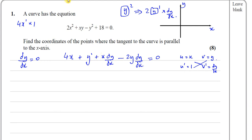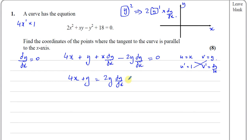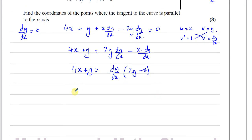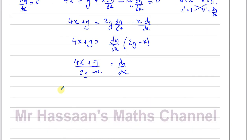Now I need to make dy/dx the subject. I'll collect the dy/dx terms on one side and the non-dy/dx terms on the other. Adding 2y dy/dx to both sides and subtracting x dy/dx, I can factorize dy/dx as a common factor, giving dy/dx times (2y minus x). Dividing both sides by (2y minus x), I'm left with dy/dx equals (4x plus y) over (2y minus x).